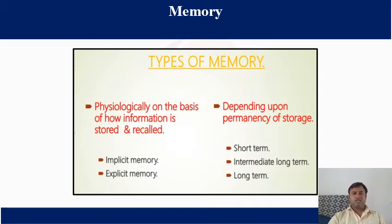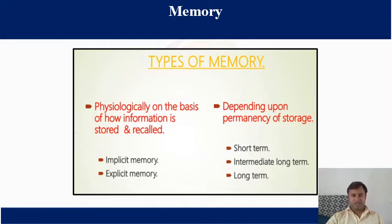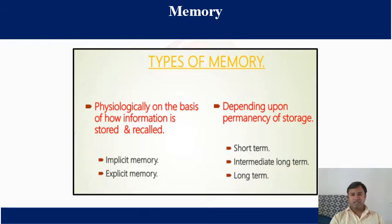Now, types of memory. It can be divided into two types. First, physiologically on the basis of how information is stored and recalled, it is of two types: implicit and explicit memory. Second, depending upon permanency of storage, it is of three types: short-term memory, intermediate, and long-term memory.